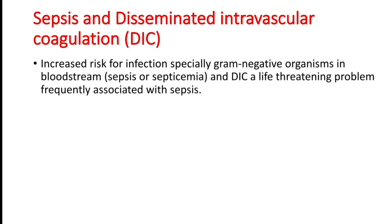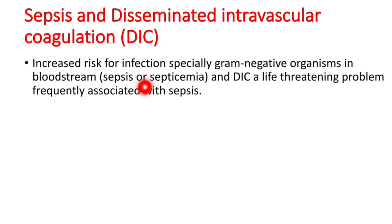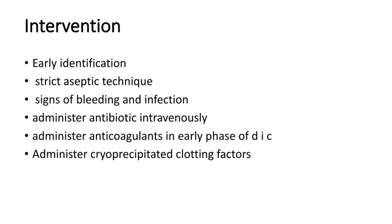Next is sepsis and disseminated intravascular coagulation (DIC). Patients suffering from cancer are at risk for infection, especially from gram-negative organisms. Gram-negative organisms can enter the bloodstream causing septicemia and sepsis. DIC is a life-threatening problem frequently associated with sepsis — when septicemia takes place, the blood can coagulate on its own.